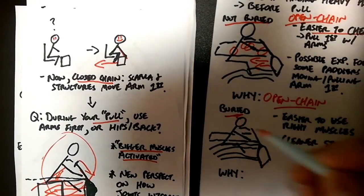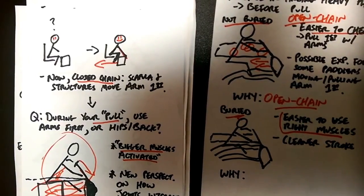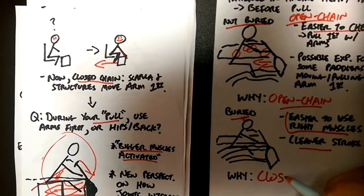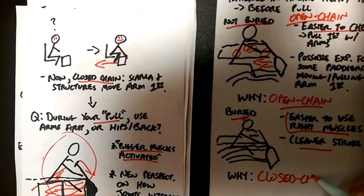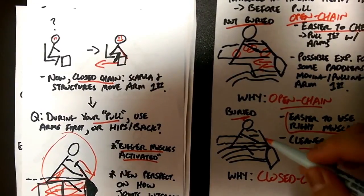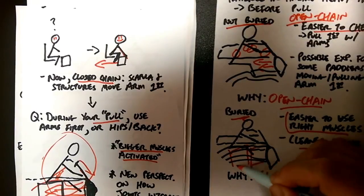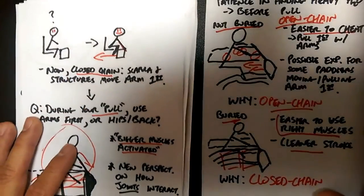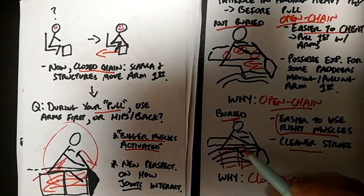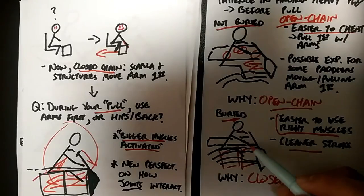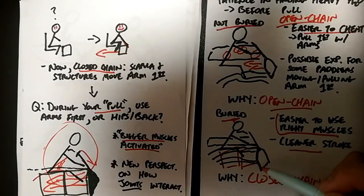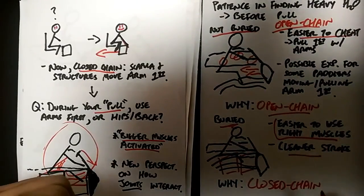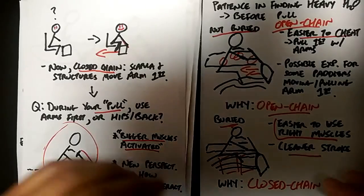When your blade is buried, however, it's going to be easier to use the right muscles. You're going to have a cleaner stroke and you will be in a closed chain position, right? This is the box from at first. Your blade is fully in the water. It's going to be harder to break at your arms first because you got that full blade in and now you're in a closed chain position where you're forced to move your hips, forced to move your back, all before moving your arms.